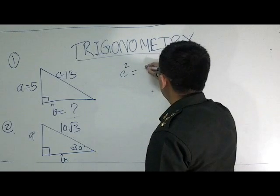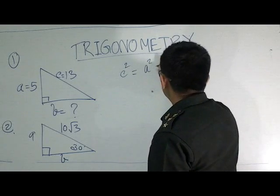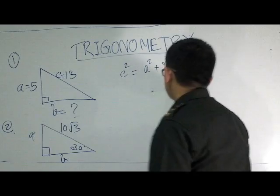The theory states: C squared equals A squared plus B squared.